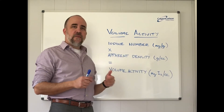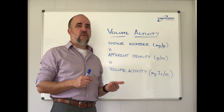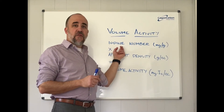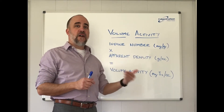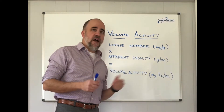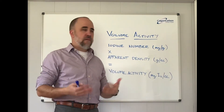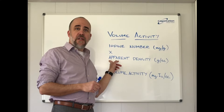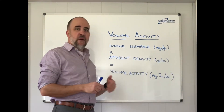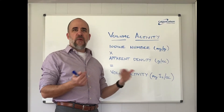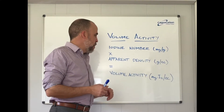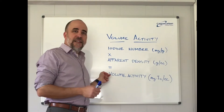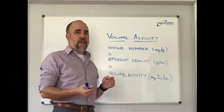What's really critical to consider is that most of the time when we see a specification, that specification is written for a carbon of a set iodine number — be it 900, 1000, or 1100 — and there's also apparent density included, so this could be a value around 0.5 or maybe 0.55 grams per cc. It's rare, however, that they're actually connected into what makes sense for the application.